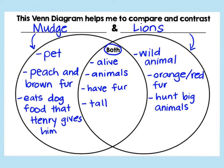We have now filled out a Venn diagram comparing and contrasting Mudge and Lions. Go ahead and finish filling out your Venn diagram, or if you want to do a different animal, go ahead and start that. This Venn diagram is optional to turn in to Seesaw — you can take a picture or take a video and read it to me, but you do not have to. Thank you, second grade.